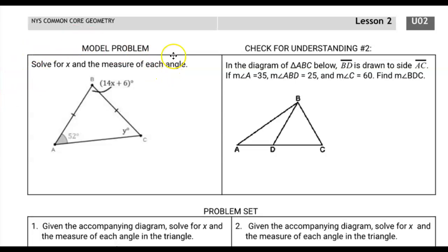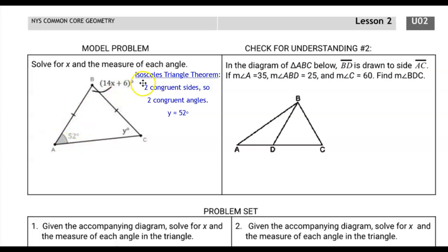Your responsibility now is to check this model problem and make sure you know how to do it. There are a couple of specific things you need to know. Think about the types of triangles we learned last lesson. The isosceles triangle theorem says that two congruent sides means two congruent base angles. We can identify that two sides are congruent by their hash marks, which means both base angles equal 52 degrees.